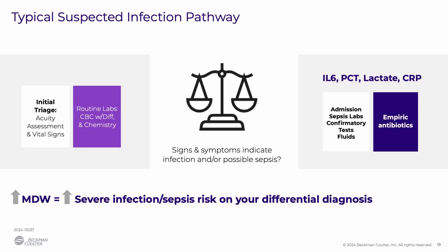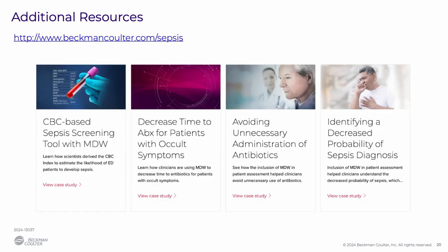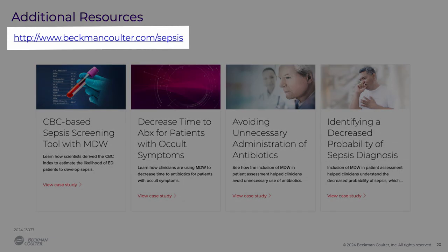To wrap up, if we think about the typical care pathway for a suspected infection, it starts with triage and progresses through routine labs. However, in some patients, even after physical exam and routine lab results, the treatment pathway is still not clear. MDW provides an additional objective data point early on in patient presentation to the emergency department because results are available as soon as a CBC with diff is reported. This extra information can assist the physician in bumping up severe infection or sepsis higher in the differential diagnosis, even when other symptoms or labs are ambiguous. If you're interested in learning more about MDW, you can find additional educational resources including case studies and articles on the Beckman Coulter website.